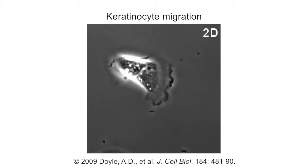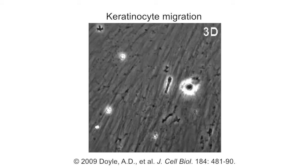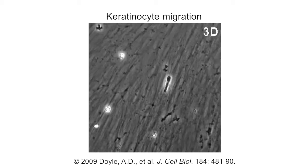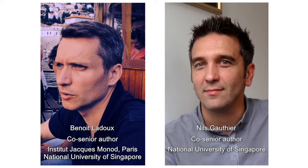Much of what we know about cell migration comes from studies of cells moving across two-dimensional surfaces in vitro. However, cells use a variety of different mechanisms to migrate through the complex three-dimensional environments that they experience in vivo.